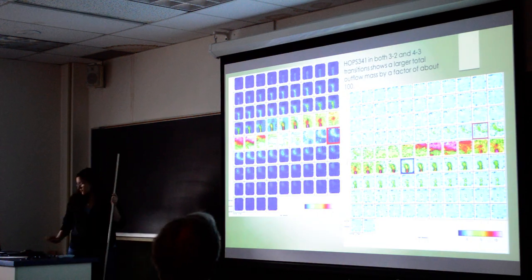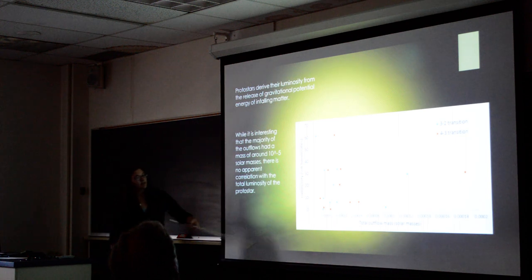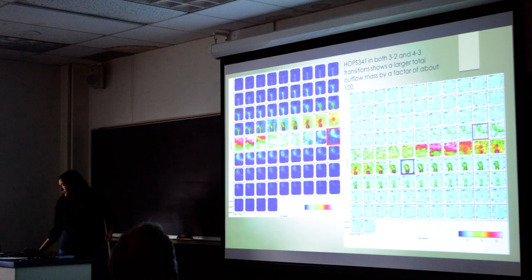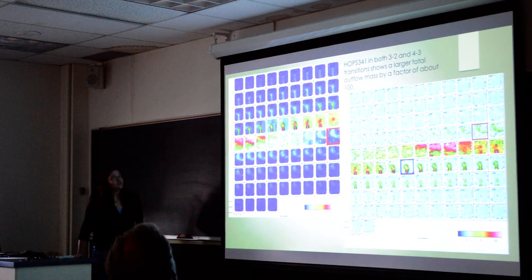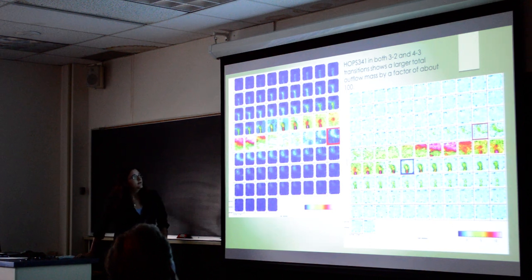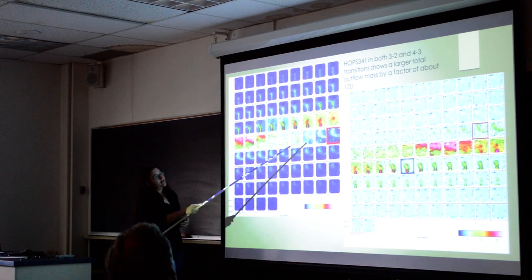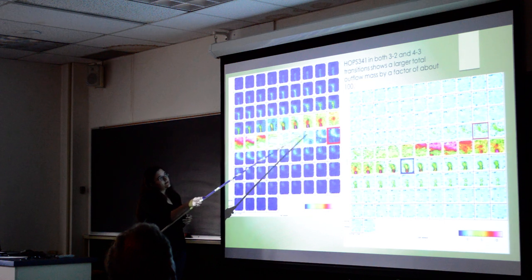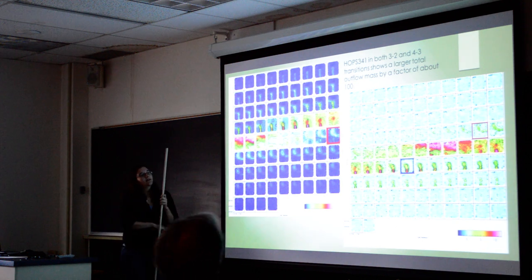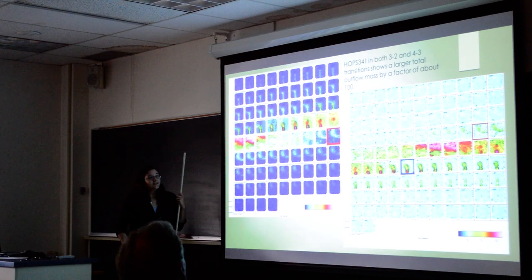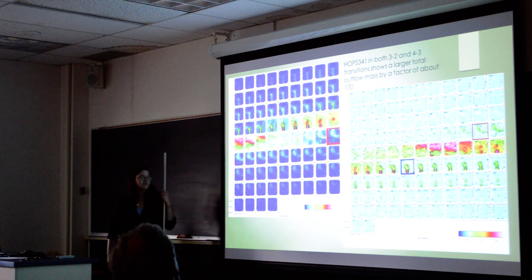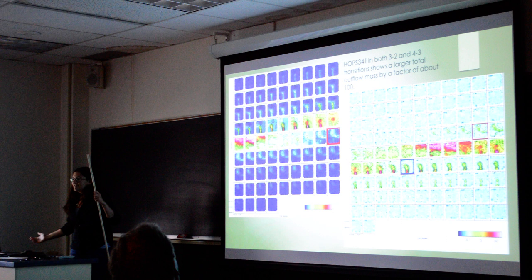The two outliers over here that have the much larger mass were HOPS 3.1. We think this is because it might actually be multiple sources and not just one. As you can see from here, it actually looks like the outflow is coming from two different sources in both the blue and red directions. So we think that the fact that we saw a larger mass for both is actually very good, and it supports that hypothesis, though obviously it's not conclusive.